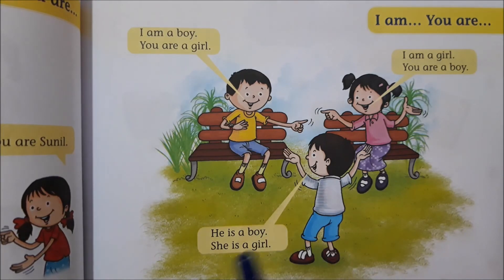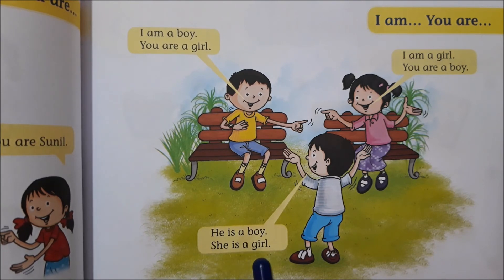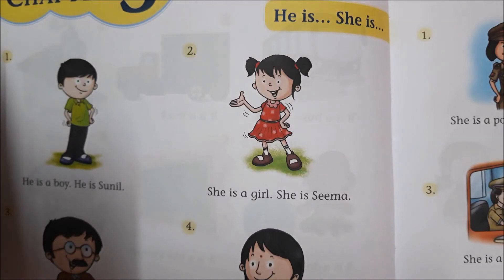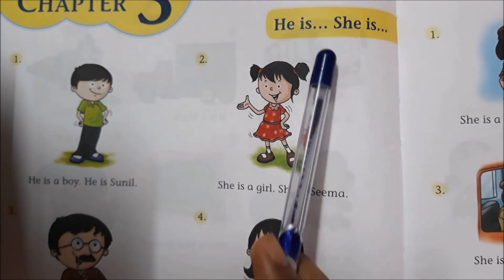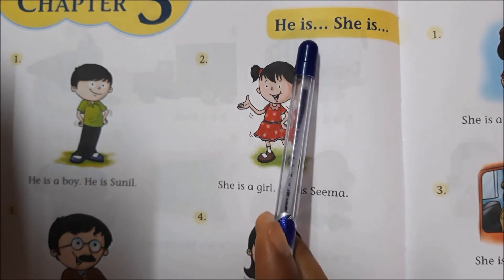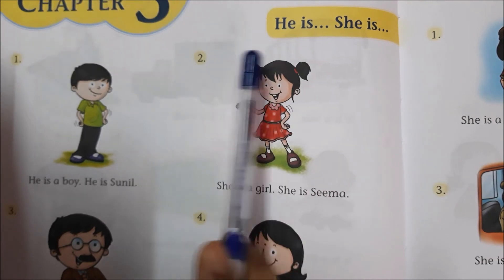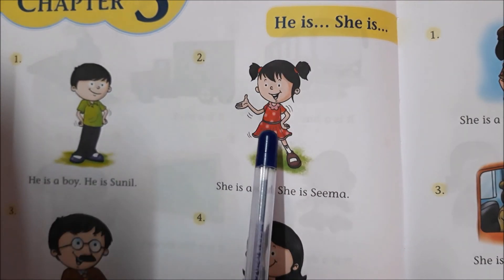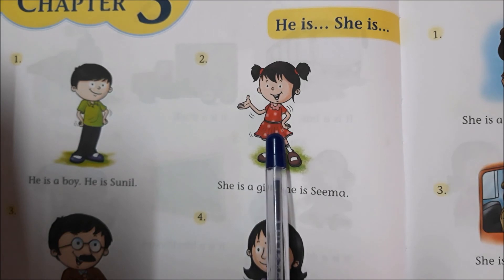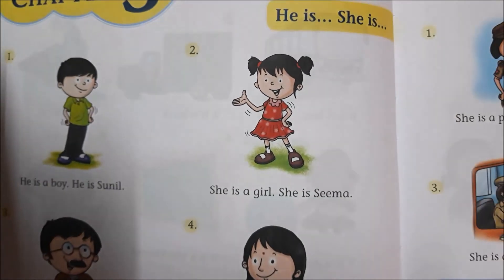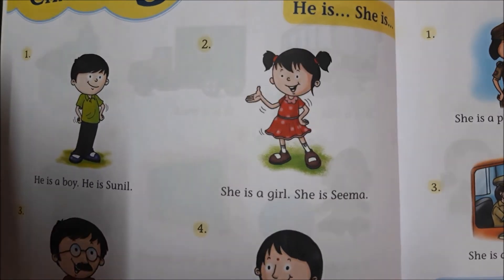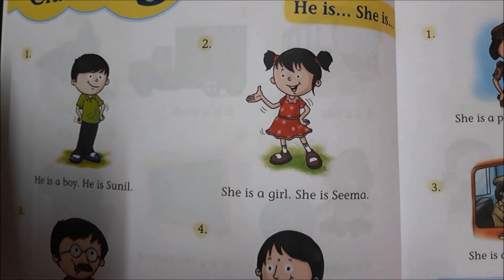Now look at this boy. He is saying he is a boy. She is a girl. So as a reminder, when there is a boy or a man, you use the word he is — he is a boy. When there is a girl, a woman, or a lady in the picture, you use she is. We will do more of this exercise and there will be more homework so you can learn this better.